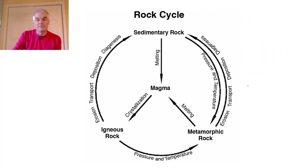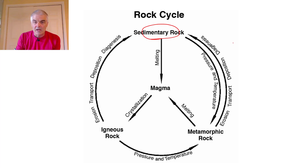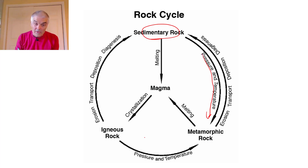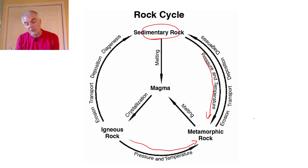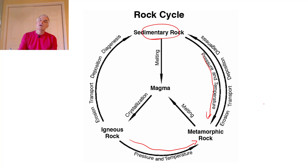What did they change from? They changed from a sedimentary rock. Pressure and temperature makes a metamorphic rock. So they came from one of the other two types of rocks.